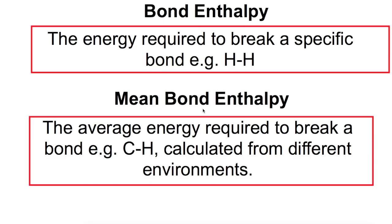Breaking bonds is an endothermic process whereas making bonds is an exothermic process and I'm going to talk you through the steps required to work out the enthalpy change using bond enthalpies.